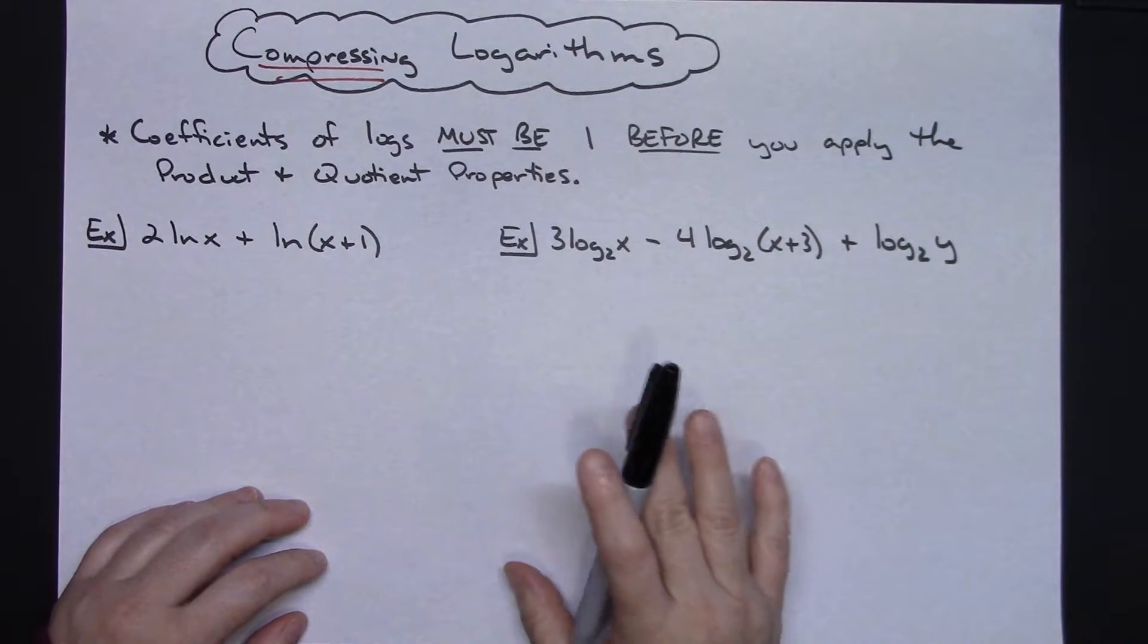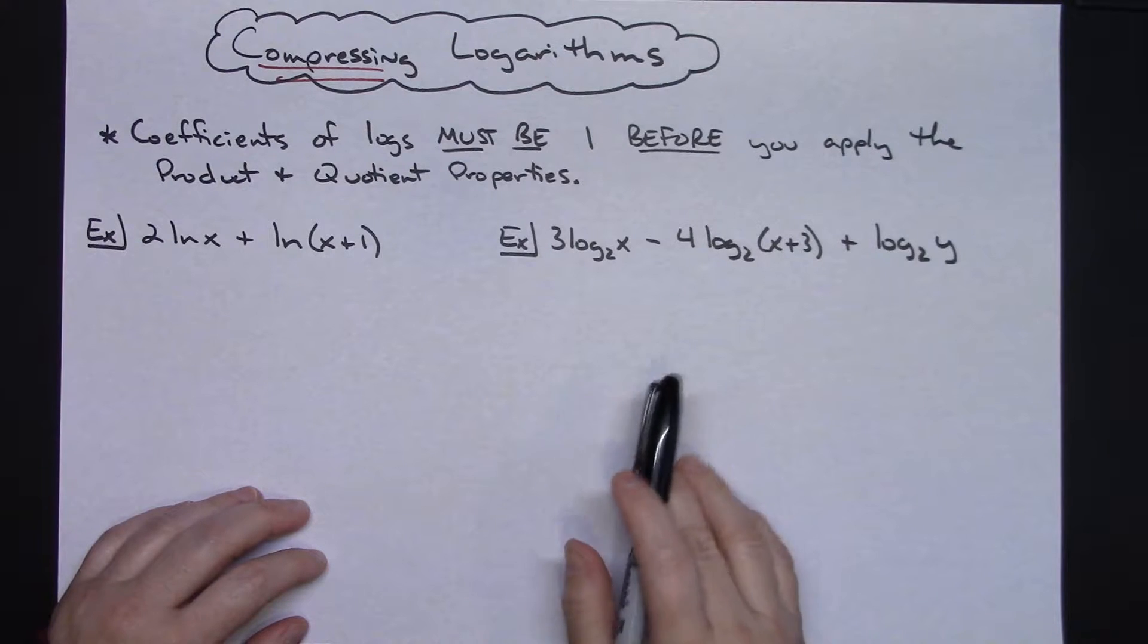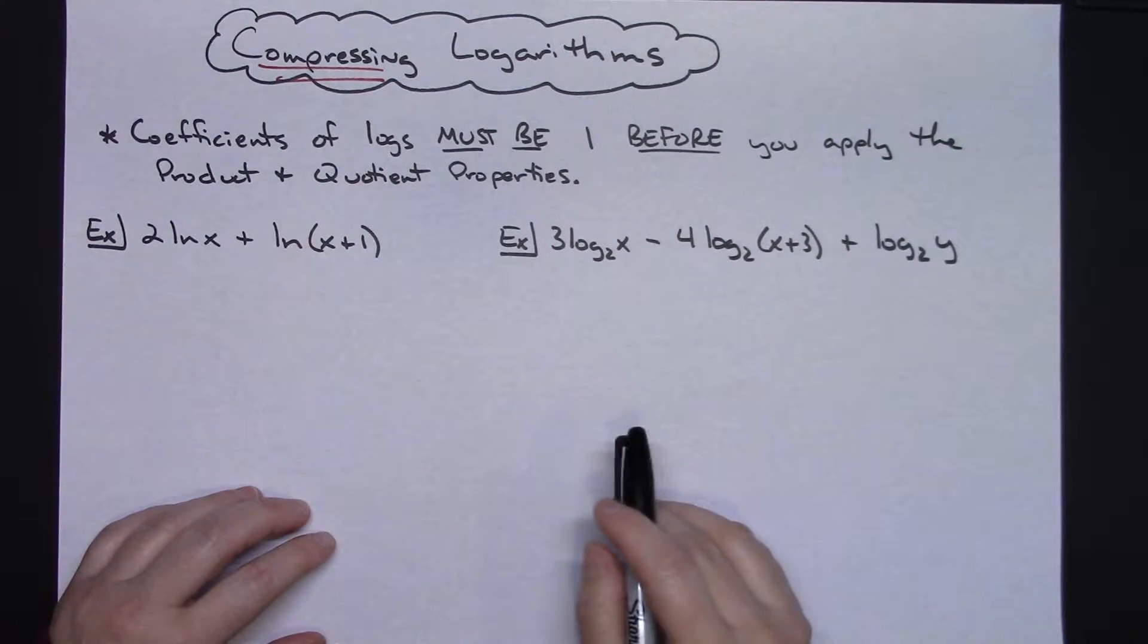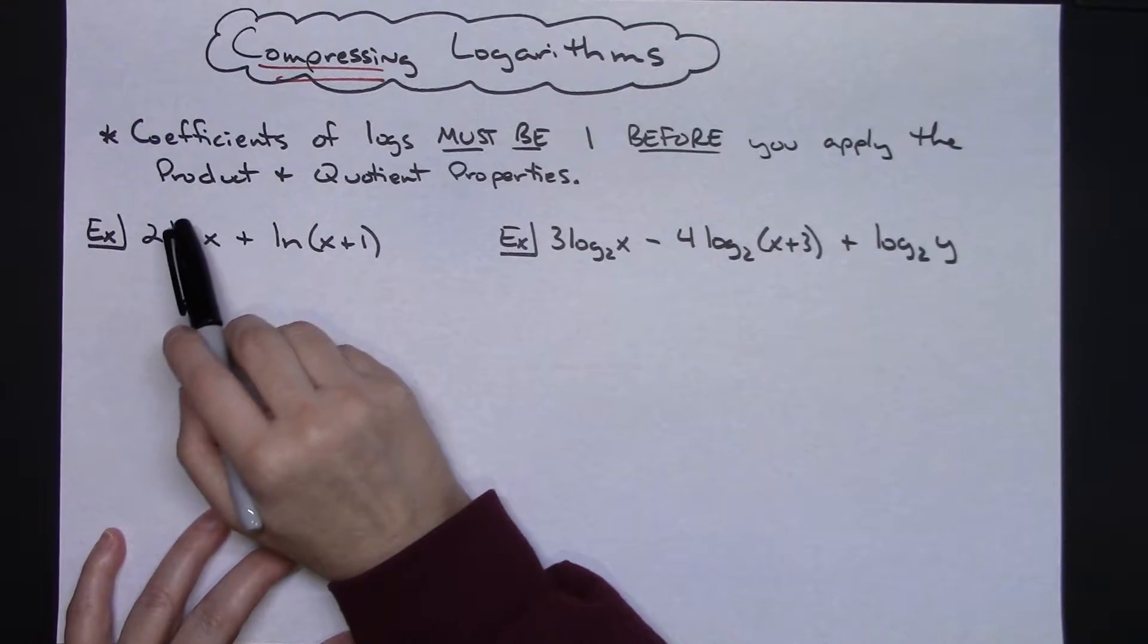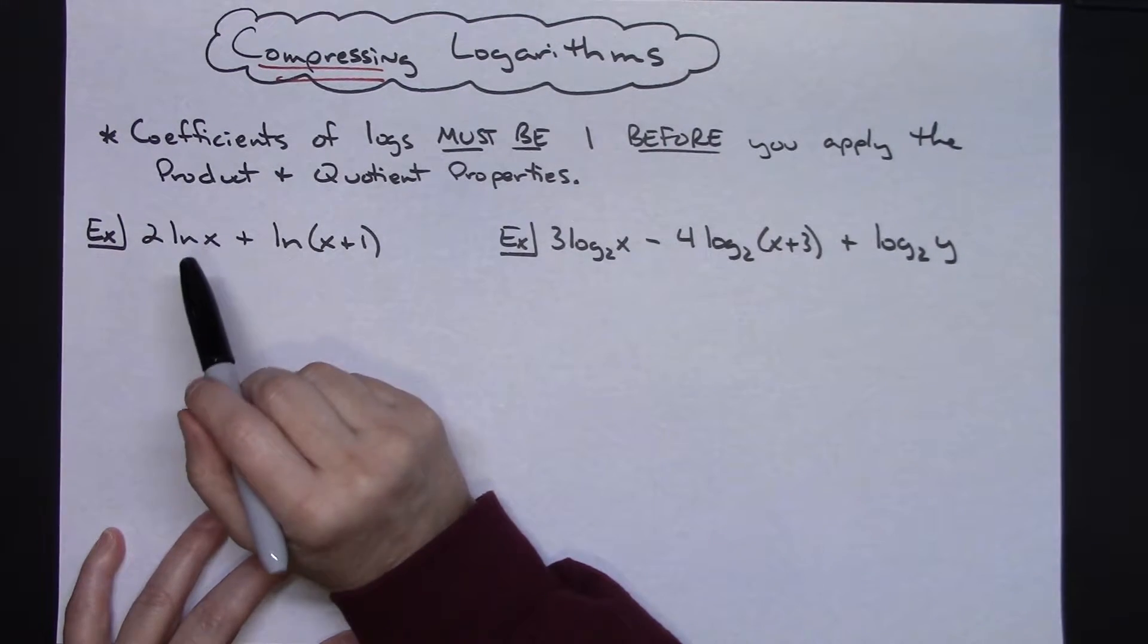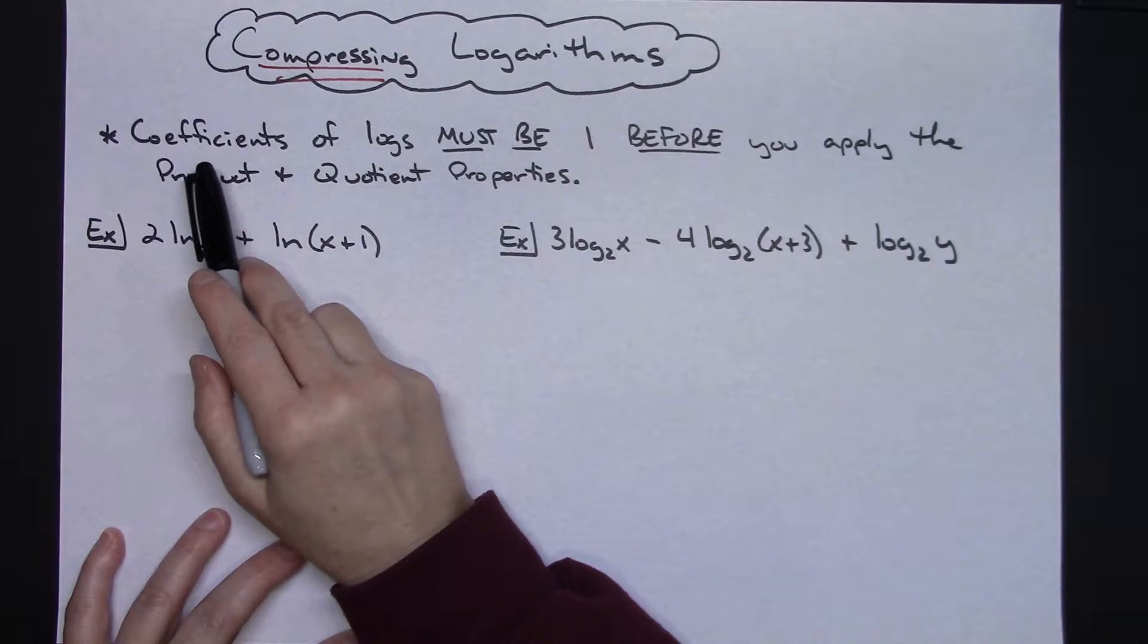In this video I'm going to work out two examples of compressing logarithms using your properties of logarithms. Before we start here I would like to make note that when you are compressing your logs you're going to want to make sure that your coefficients of each of your logs on each of your terms is a 1 before you start to apply your product and quotient properties.